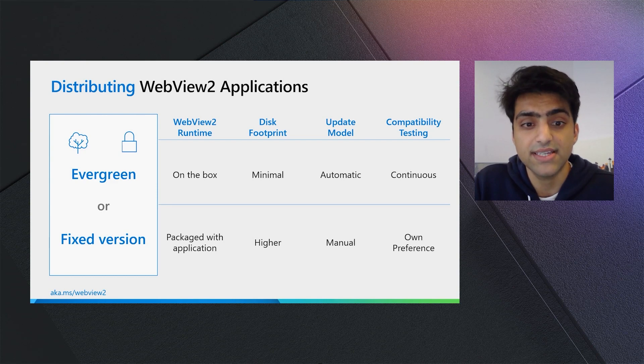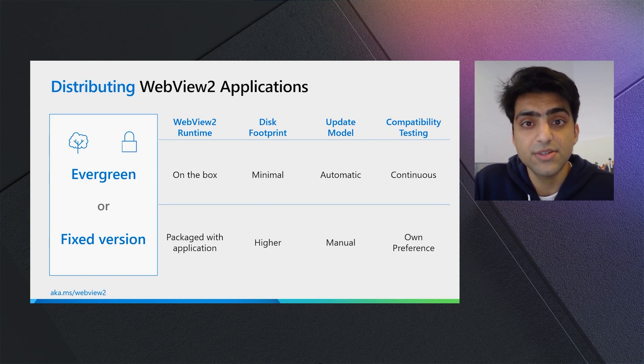Now for the fixed version where the WebView2 runtime is packaged with the application, it is up to the developer to update the WebView2 runtime at their own pace. This leads to differences in compatibility testing. For evergreen developers where the WebView2 runtime is updated automatically, it's important to continuously test your application and WebView2 content the same way that web developers do, which is continuously against the non-stable channels of Microsoft Edge. For fixed version distribution developers, compatibility testing can be done at your own pace and cadence. That's why we only recommend the fixed distribution mode in scenarios when compatibility is of the utmost importance.